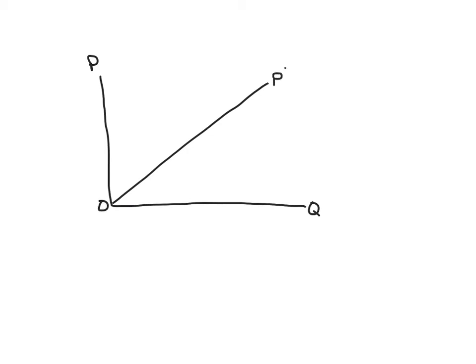So for this example, the supply curve is really simple. It's just supply price equals quantity supplied. So there's our supply curve with a y-intercept of zero. The demand curve has a y-intercept of 100 and a slope of negative 3. So demand price is equal to 100 minus 3 times quantity demanded. And the free market outcome is going to be here where supply equals demand.